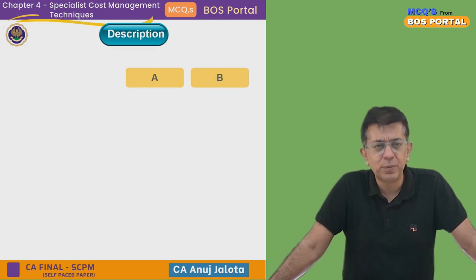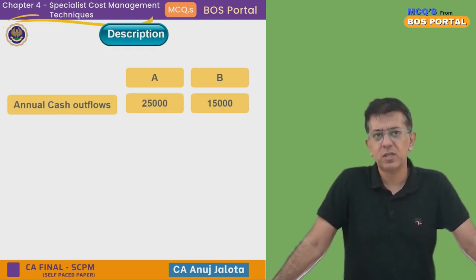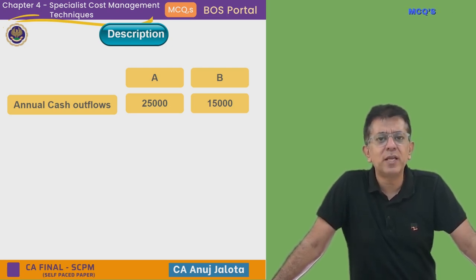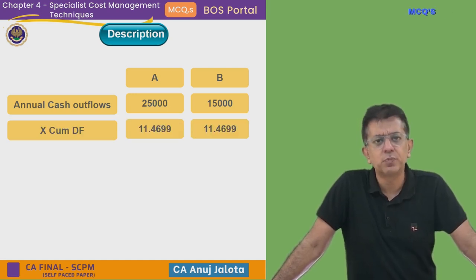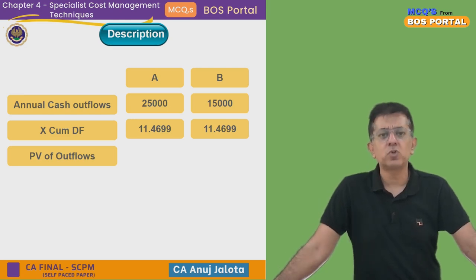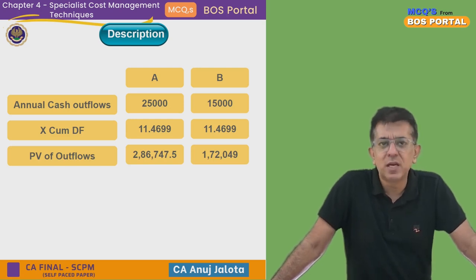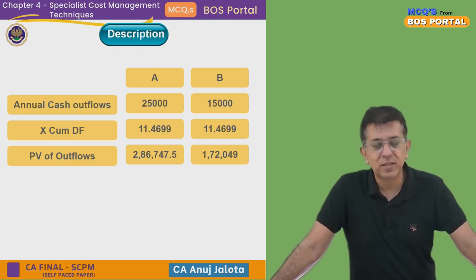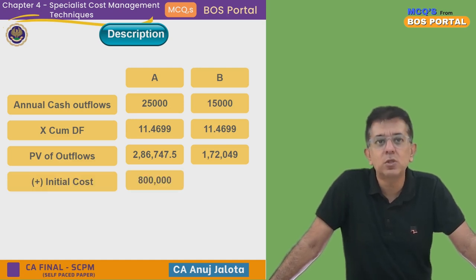First, let's look at annual cash outflows: 25,000 for Equipment A and 15,000 for Equipment B. These are spent each and every year for 20 years, so multiply by the cumulative discounting factor of 11.4699 to arrive at the present value of annual cash outflows. Once that is done, whatever you spend over 20 years — this is the present value of that.